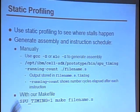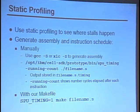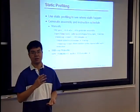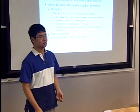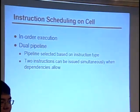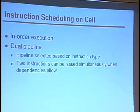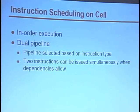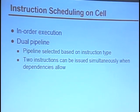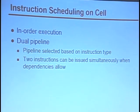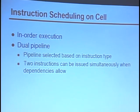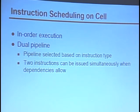If you're using our makefile, you can generate the assembly and timing info all in one step by doing SPU_TIMING=1, then make the name of the .s file. On cell, we're going to have only in-order execution — instructions execute in the order specified in the assembly. Because the cell has dual pipelines, there are two pipelines into which instructions can go, and the pipelines are selected based on the instruction type. Two instructions are only going to go in simultaneously when the dependencies allow it.